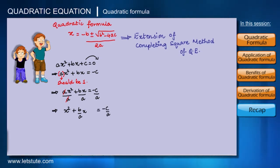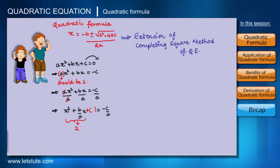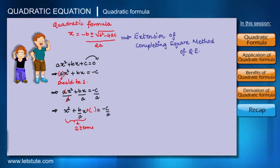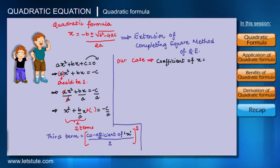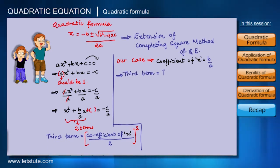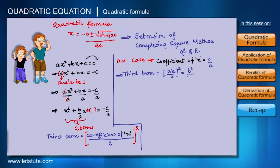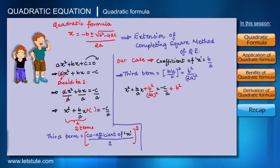Our equation becomes X² plus (B/A)X equals minus C/A. To complete the square on the left-hand side, we need three terms, but we have only two. To find the third term — as we learned in the completing the square method — we take the coefficient of X, divide by 2, and square it. The coefficient of X is B/A, so dividing by 2 gives B/(2A), and squaring gives B²/(4A²).